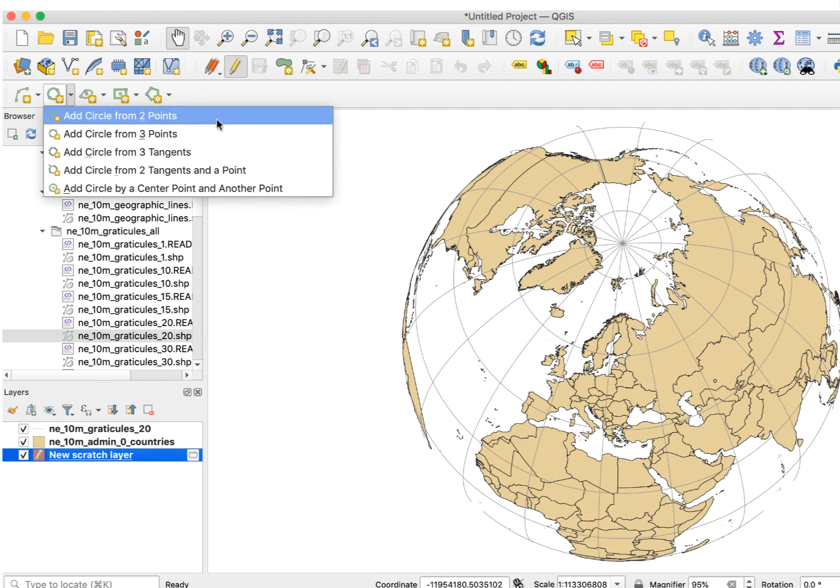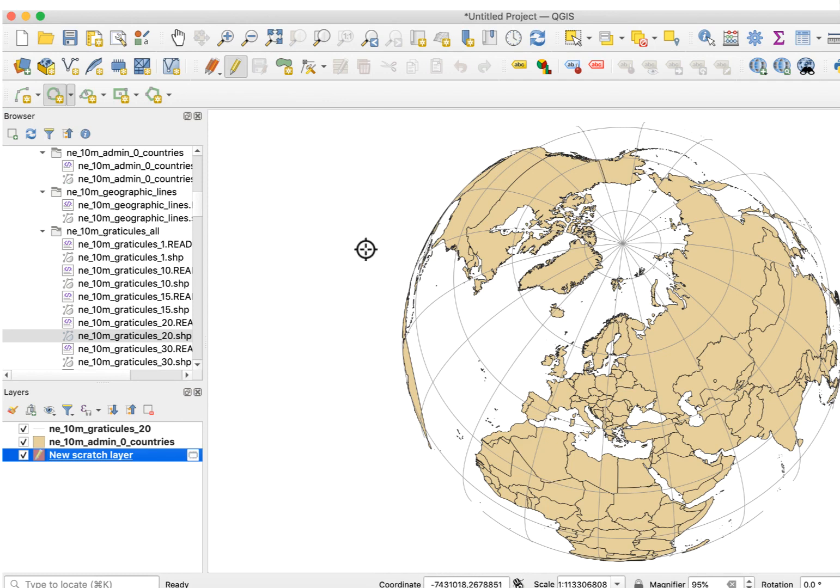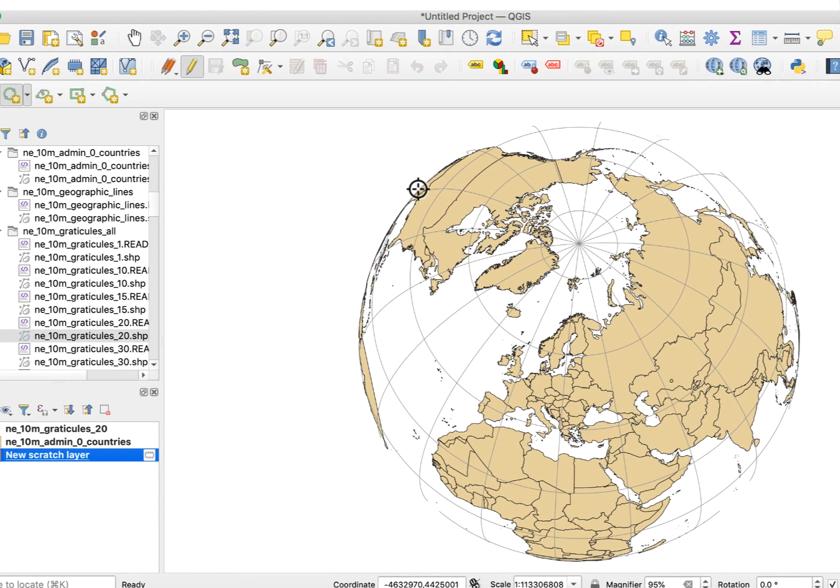This will let us draw a circle by clicking a starting and ending point, which will be opposite sides of the circle. Here's the tricky part. You want to look for two points on opposite sides of the globe that have land areas. This will make it easier to draw the circle the correct size.